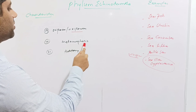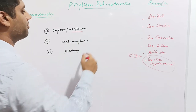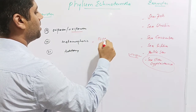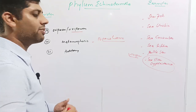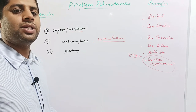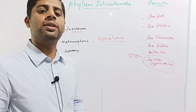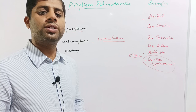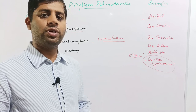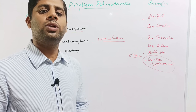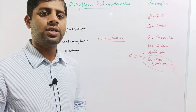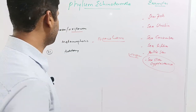Echinoderms have a bipinaria larva which shows bilateral symmetry, meaning a larval stage is present. The larva does not resemble the adult; rather, it undergoes certain morphological changes to attain the adult shape. This whole process of development from fertilization of the egg to development of the adult is called metamorphosis.